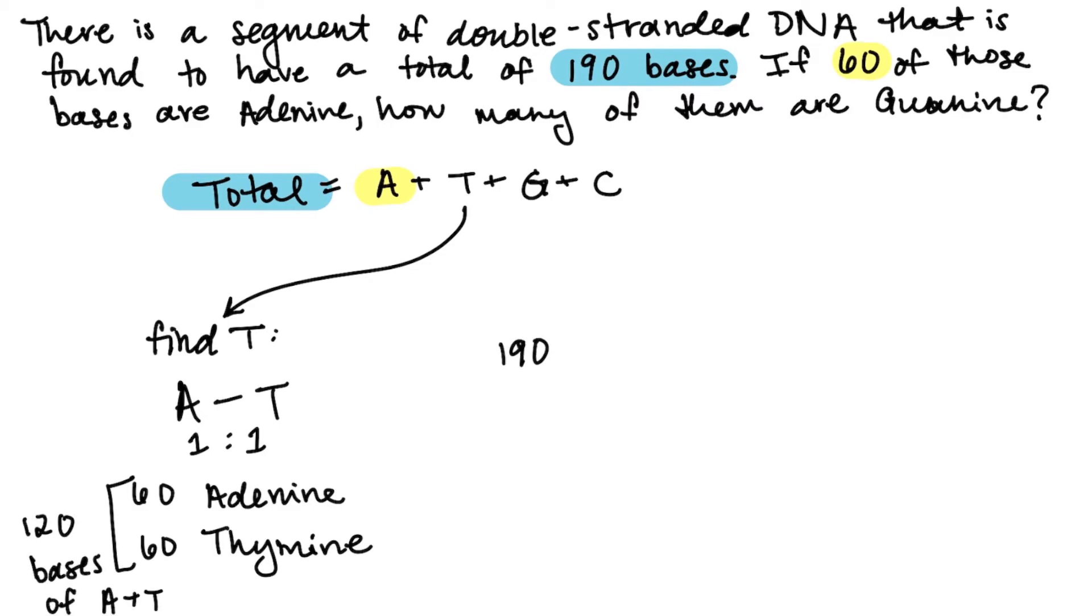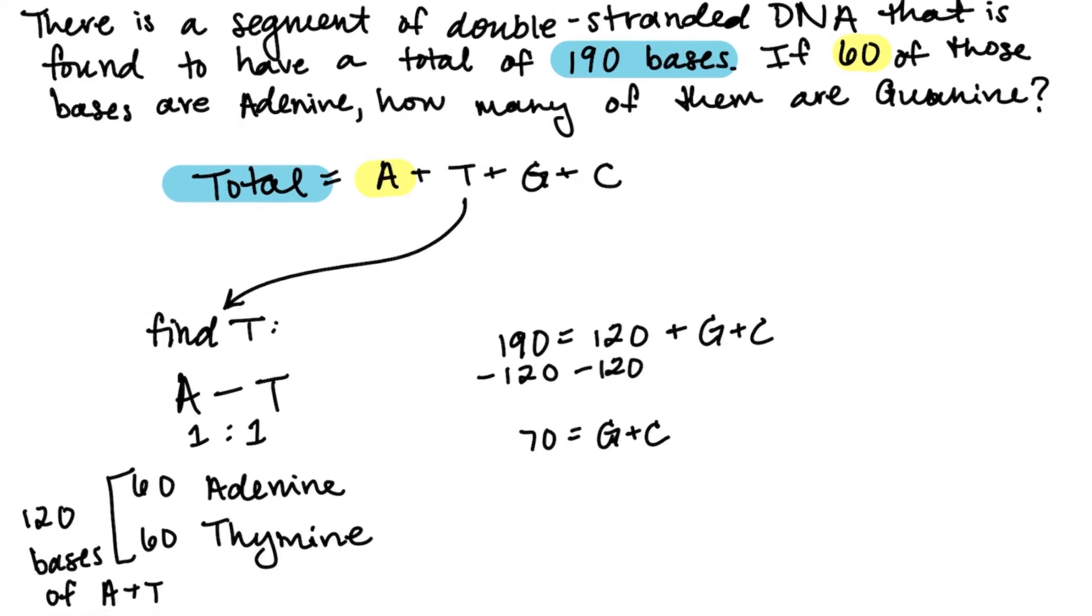You can substitute that there's 190 bases as the total and 120 bases as A plus T. Subtract 120 on both sides, and you're left with 70 equals the number of guanine plus the number of cytosine.